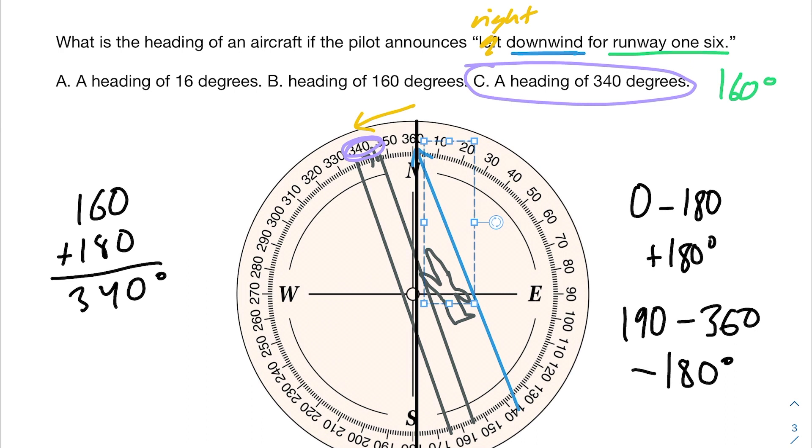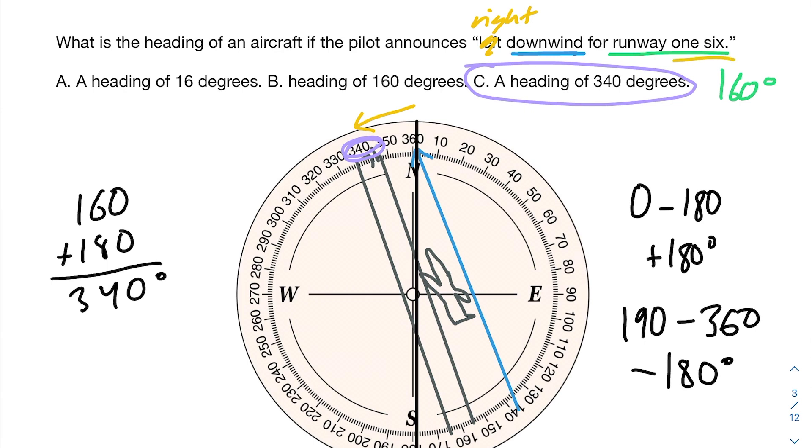So that's how you solve these kinds of airport operation problems. Make sure you know the difference between left and right-hand traffic patterns. Make sure you know the different legs of an aircraft landing. Make sure you know what these runway 16, 17, 18, etc., what those numbers mean in reference to where you're landing and what direction you'll be heading as you're attempting to land.